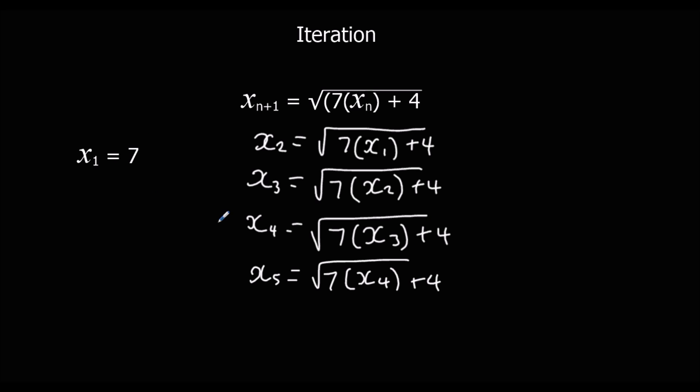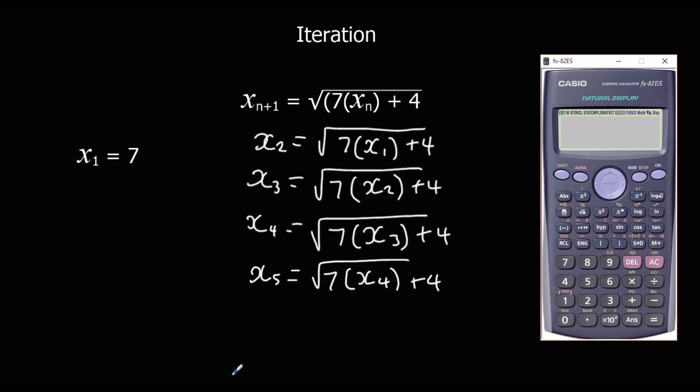So we're told the first term is 7. So what we're going to do is we're going to grab our calculator, and the easiest thing to do is to get 7 as the answer. So press 7 and then press equals, and get 7 down there. So 7 becomes what's in the ans button, and we're going to use that. So we're going to write out this square root of 7 times this, which is now our answer, plus 4. So we've copied this formula out, and we've got 7. We've put it into the answer, so 7 is there. And if we press equals, we've got square root 53. Or if we press SD, 7.280109889.